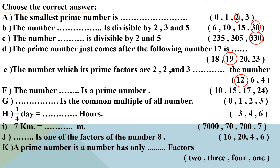Letter F: which number is a prime number? Is 18 a prime number? No. Is 15 prime? No. Is 17 prime? Yes — 17 is a prime number. It has only 2 factors: 1 and 17. So 17 is a prime number.